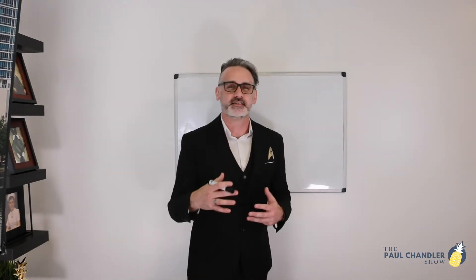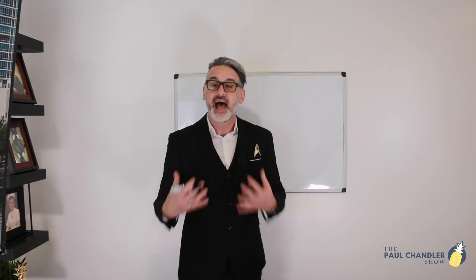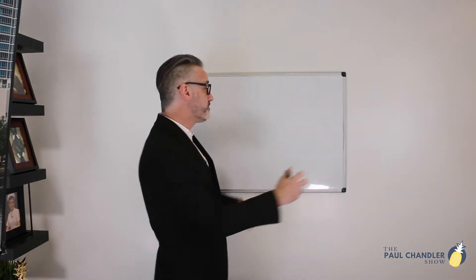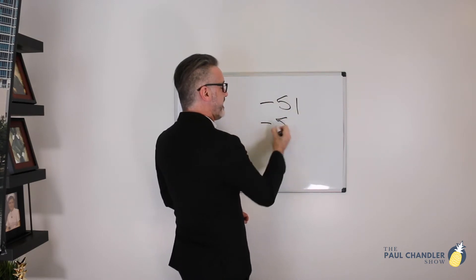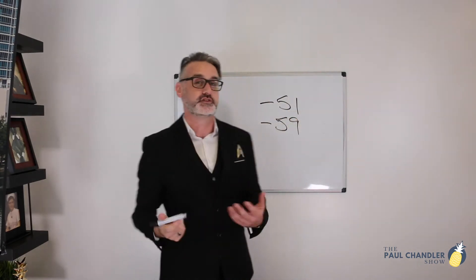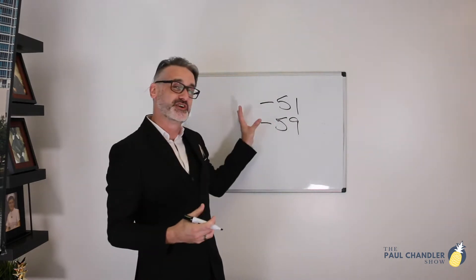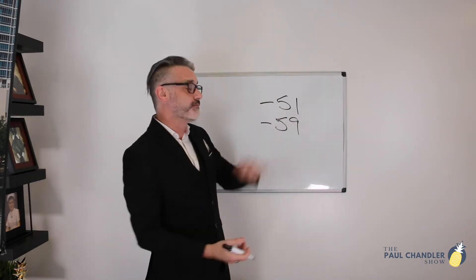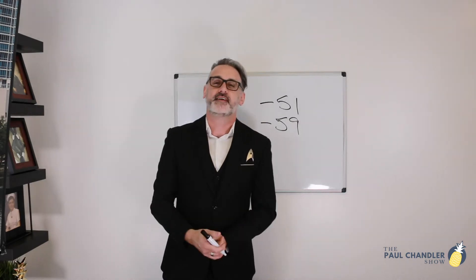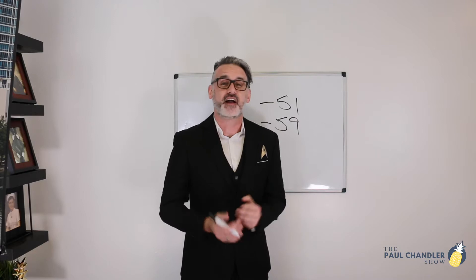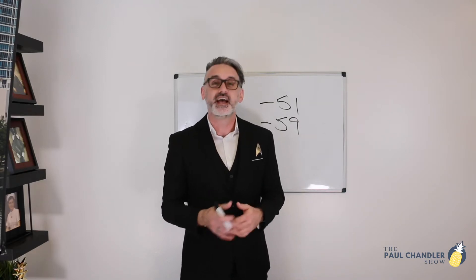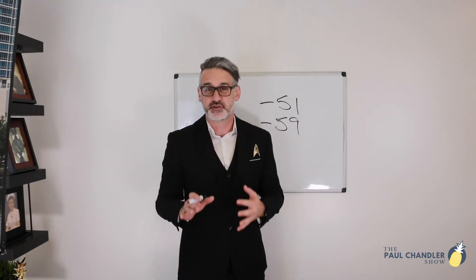Welcome back everyone. Tonight we're going to learn about Modifier 51 and Modifier 59. And since every computer program is different, how I'll be describing it on the board will be a hyphen and then 51, and then a hyphen and 59, so that I can put the procedure code in front of it — a hyphen and then the number after it representing Modifier 51 or Modifier 59. One problem that coders often have is distinguishing between Modifier 51 (multiple procedures) and Modifier 59 (distinct procedural service).